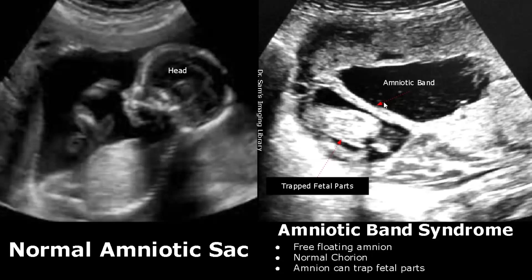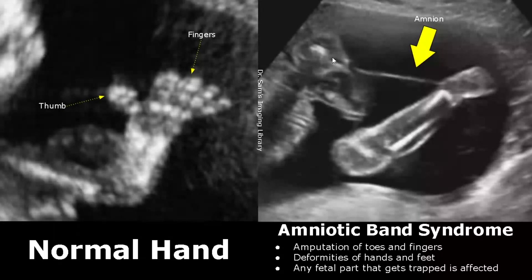Amniotic band syndrome occurs when the amnion is disrupted from the chorion and is able to float around freely. This free-floating amnion may trap any fetal parts, causing deformities in the trapped part and can even lead to fetal demise. Usually it affects the fetal limbs and can even cause amputation of toes and fingers. If the fetal head is trapped, it can cause anencephaly and fetal death. If the abdomen is trapped, it can cause hernia and abdominal wall defects.